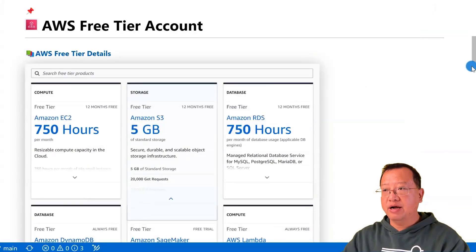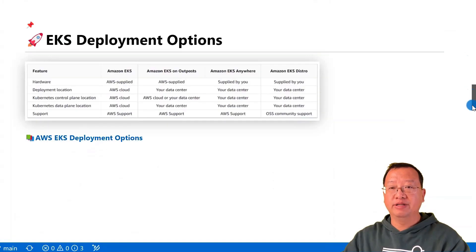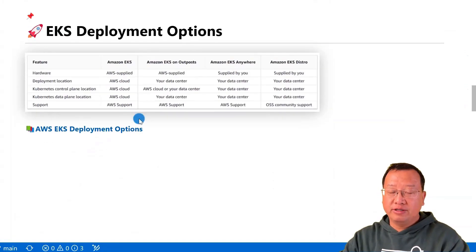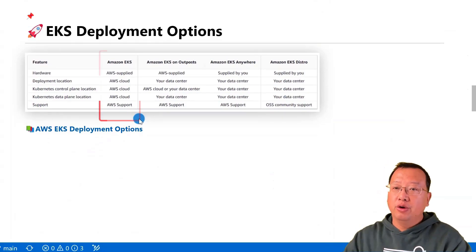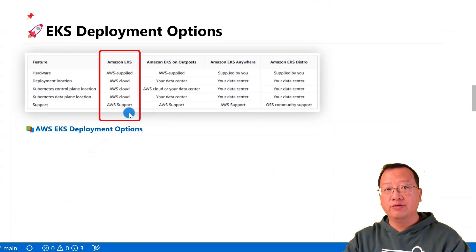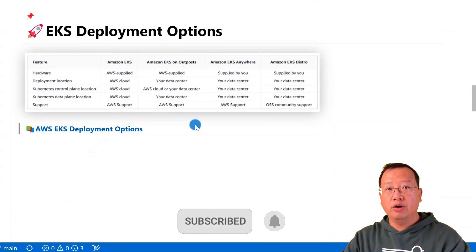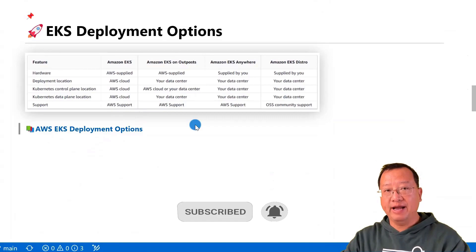Back to the markdown file — moving to the next topic: EKS deployment options. There are four deployment styles for EKS. In today's video, we'll focus on Amazon EKS, which is the popular one. AWS-provided hardware running on the AWS cloud is the Amazon EKS deployment pattern. My channel's future videos will cover the other three deployment patterns.